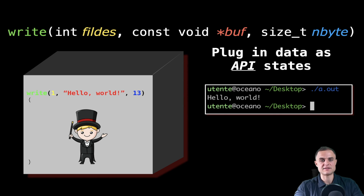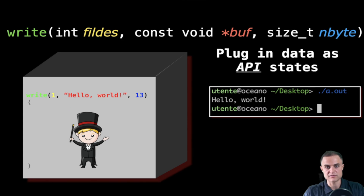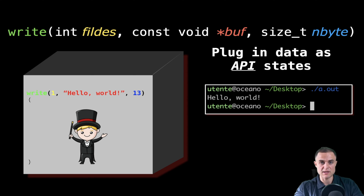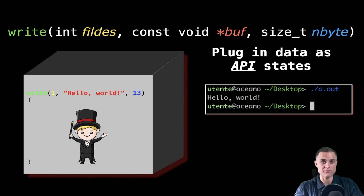In this slide I want to shed light on the API. The API is the data that needs to be plugged into the write function as arguments. I have the name of the function, and then three required data slots. First, a file descriptor — an integer. Second, a buffer, which is just a fancy name for a slot in memory, so I need an address — a pointer. And third, an integer which is the number of bytes I want to take from the buffer I provided. That's the API of the write function.